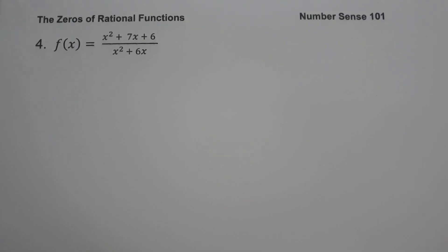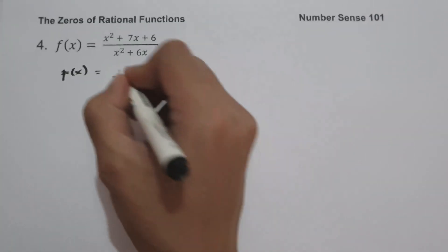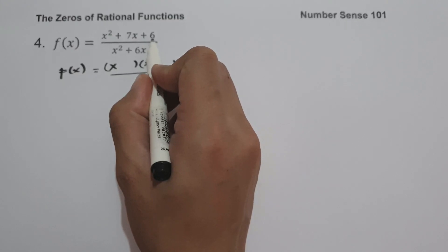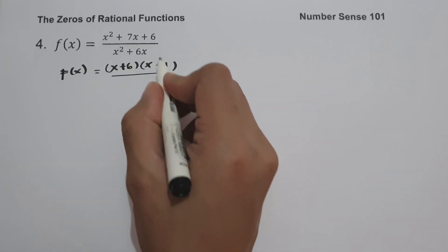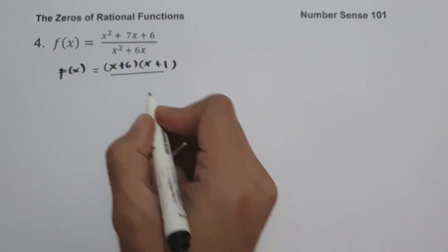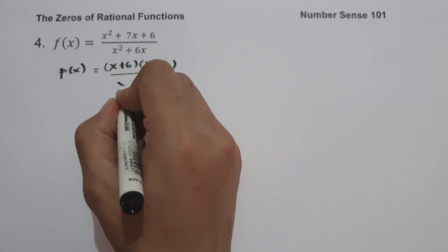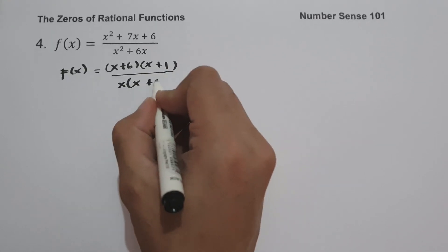On example number 4, we have f of x equals x squared plus 7x plus 6 all over x squared plus 6x. Let us factor the numerator: two numbers that multiply to 6 and add to 7 are 6 and 1, giving x plus 6 times x plus 1. For the denominator, the greatest common factor between x squared and 6x is x, giving x times quantity x plus 6.